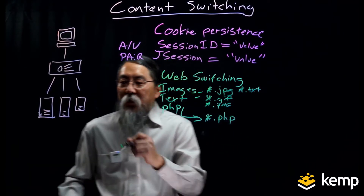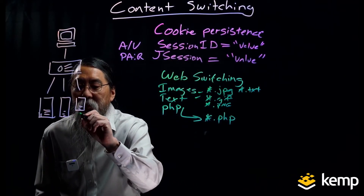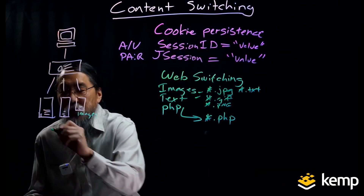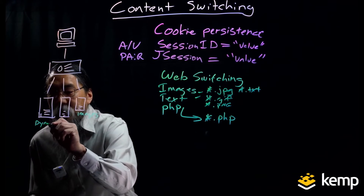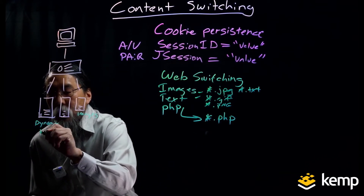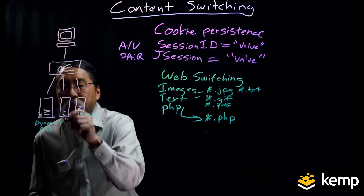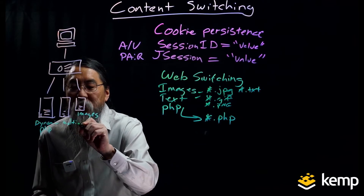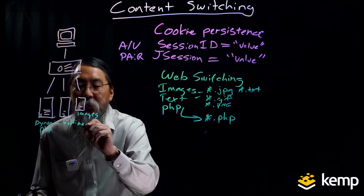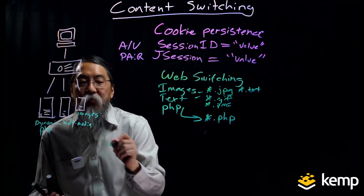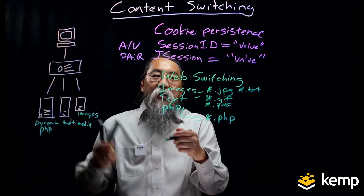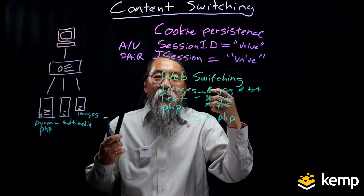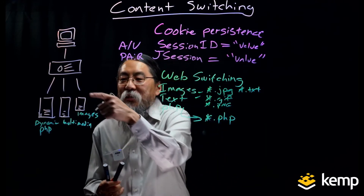So in my diagram here, I might have a server that's going to handle my images, another server for my dynamic content — my PHP — and other servers for other pieces, like multimedia for video streaming or audio streaming or anything else we want. The load balancer will look for these specific strings within the GET request from the client and send it to the different servers.